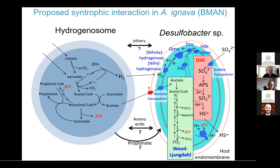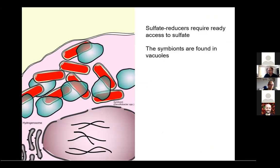One concern about proposing this is that sulfate reduction demands ready access to sulfate. If the cells are indeed endosymbionts sitting inside vacuoles, this might be a problem — so what about the access of sulfate to these vacuoles?